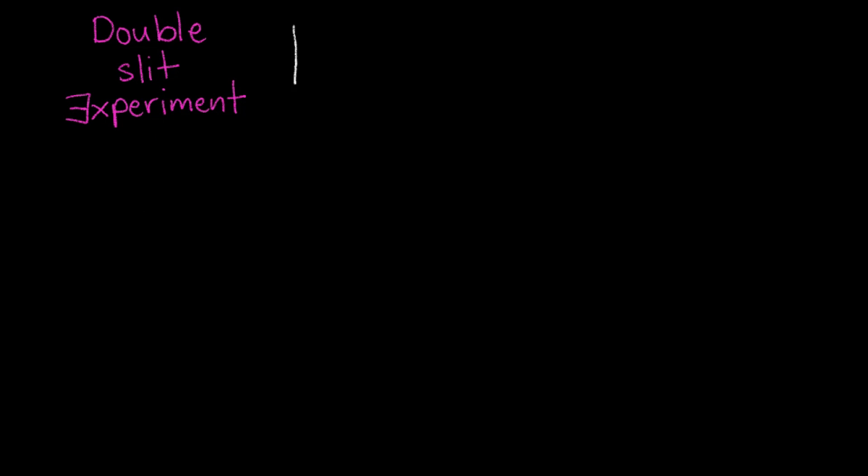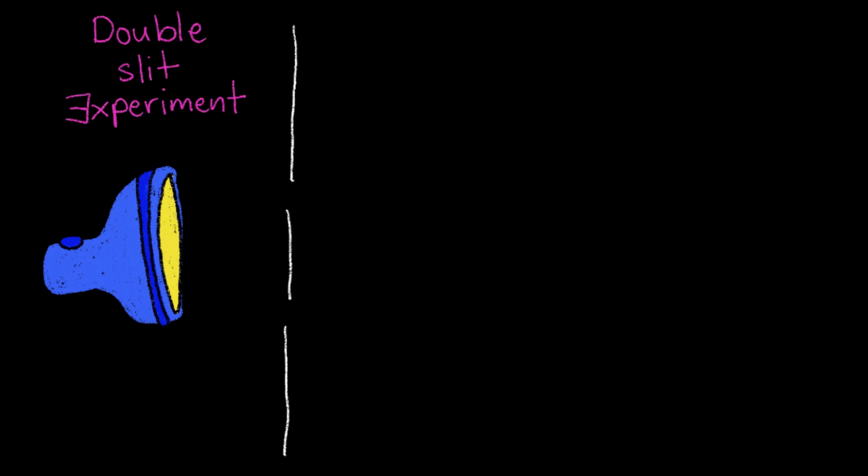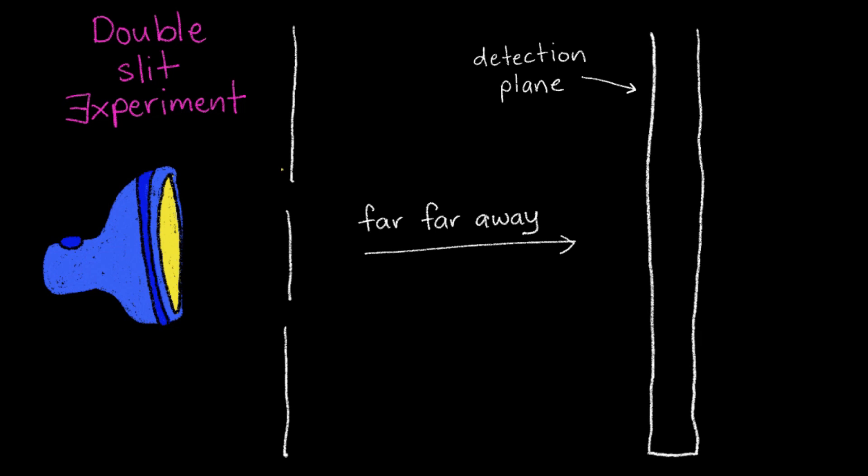So we have our two slits, double-slit. Now we're going to place a light source directly behind the two slits, so that when we turn it on, the light will shine directly through the slits. So now we've got our light source, two slits, and some distance away, like a far, far distance away, we have a detection plane. And this is usually just a screen or something, something just to show where the light is actually hitting.